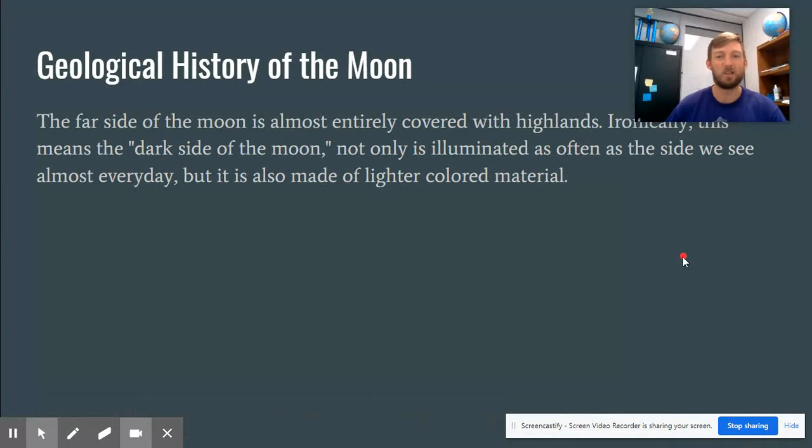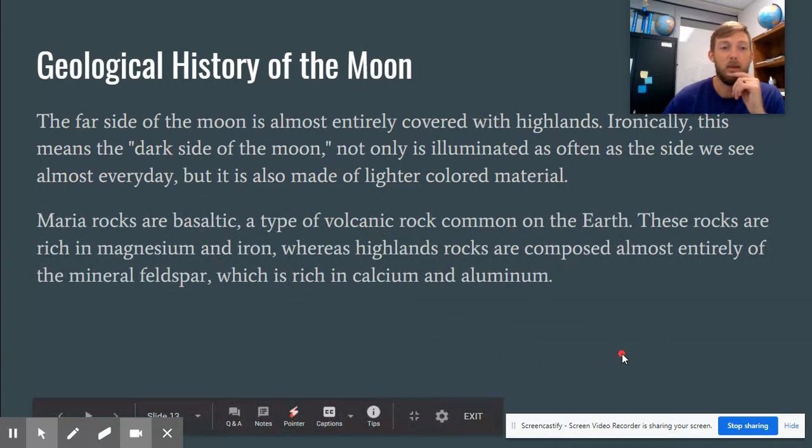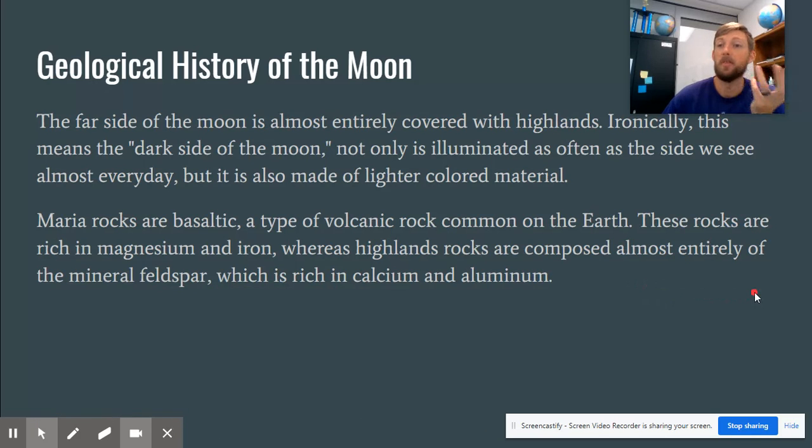So let's talk about some geological history. So the far side of the moon, even though it's normally called the dark side of the moon, is actually not that dark. So it's illuminated as often as the light side. It's just illuminated on the times when we can't see it. And so the far side is then lit up by the sun. It's also pretty much all highlands. There's not much maria on that side. And so it's actually made of this lighter colored material. So it's just funny that we call it the dark side. But the maria rocks are this basaltic volcanic rock that we see on Earth. They're rich in magnesium and iron, whereas the highlands are composed pretty much of this stuff called feldspar, which is rich in calcium and aluminum.